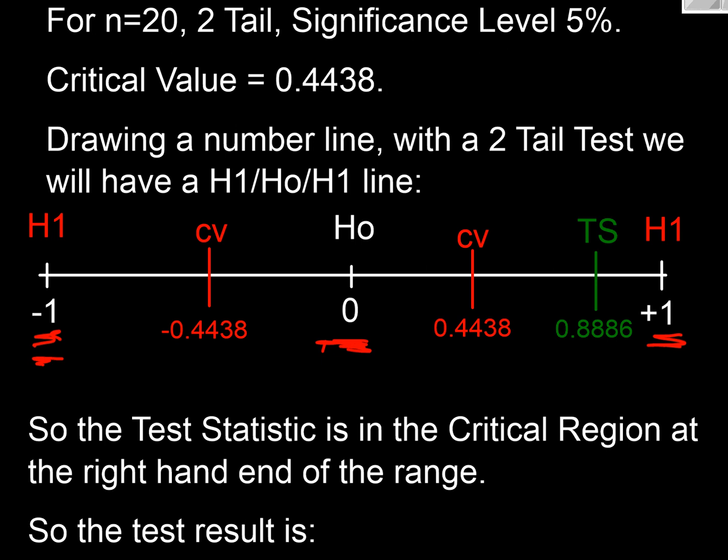We've just worked out their critical value for a two-tailed test is 0.4438. And we can now mark those on the diagram. So here's the positive one, critical value at 0.4438. So our critical region to the right is all of this going up to plus 1. And then we've got a negative value at the bottom end because if it goes to the other extreme of minus 0.4438 or beyond, that's going to be our other critical region. So we can put our H1s at either end in this example. Then we need to put our test statistic in. Well, we know r is 0.8886. So we put that in. There we go. And we see that that's in the critical region at the right-hand end. So we know what we're going to conclude here.